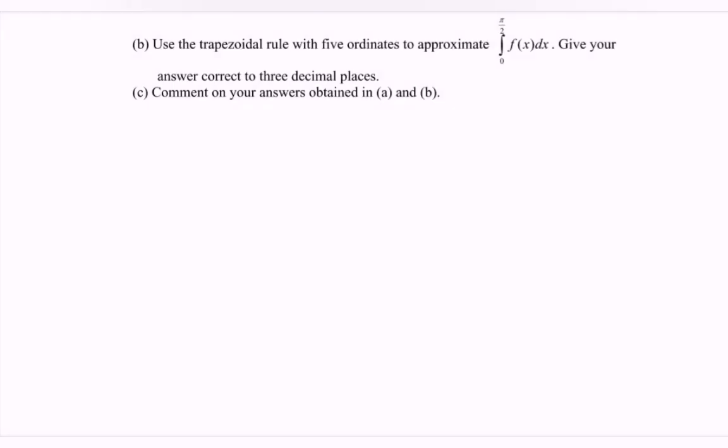Now refers to part b. Use the trapezoidal rule with 5 ordinates, so that means n equals 4, to approximate the situation given. Give your answer correct to 3 decimal places. So here we have to find h: π/2 minus 0 over 4, so h equals π/8.